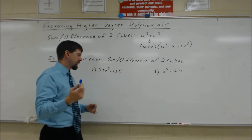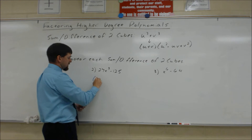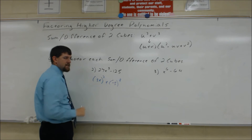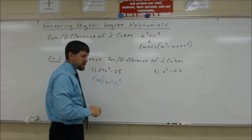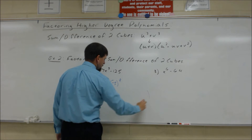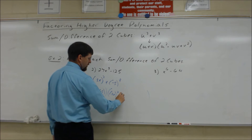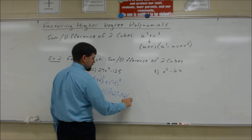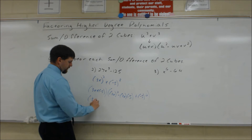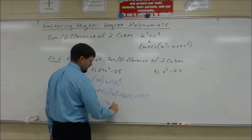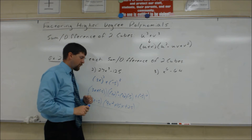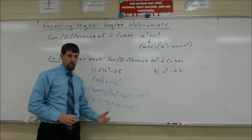27x cubed minus 125 is a difference of two cubes, but I can rewrite it as a sum of two cubes: 3x cubed plus negative 5 cubed, because negative 5 cubed equals negative 125. Using the formula, the first factor is 3x plus negative 5, and the second factor is 9x squared minus 3x times negative 5 plus 25, which simplifies to 3x minus 5 times 9x squared plus 15x plus 25. That's the final factorization — the linear binomial won't break down, and the quadratic won't factor further.